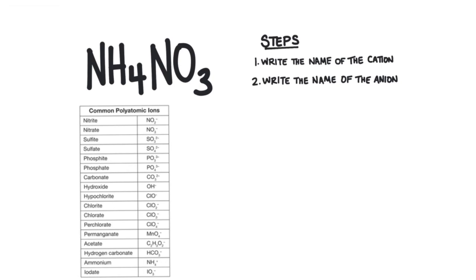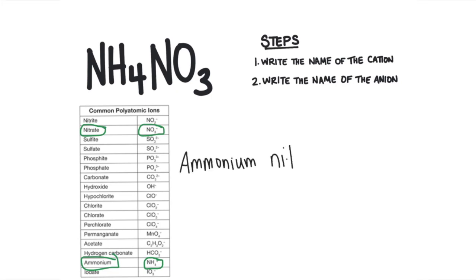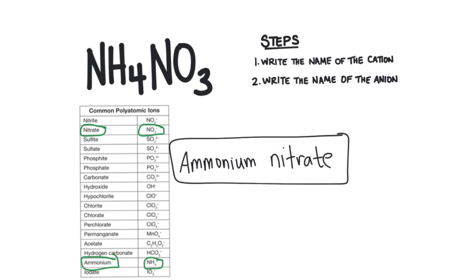Let's find these on the chart and name this compound. NH₄ is right here — that's NH₄⁺, ammonium. And NO₃ is right here — that's NO₃⁻, nitrate. So once we've found those on the chart, all we do is write the name of the cation, which is ammonium, and then write the name of the anion, which is nitrate. That gives us ammonium nitrate.